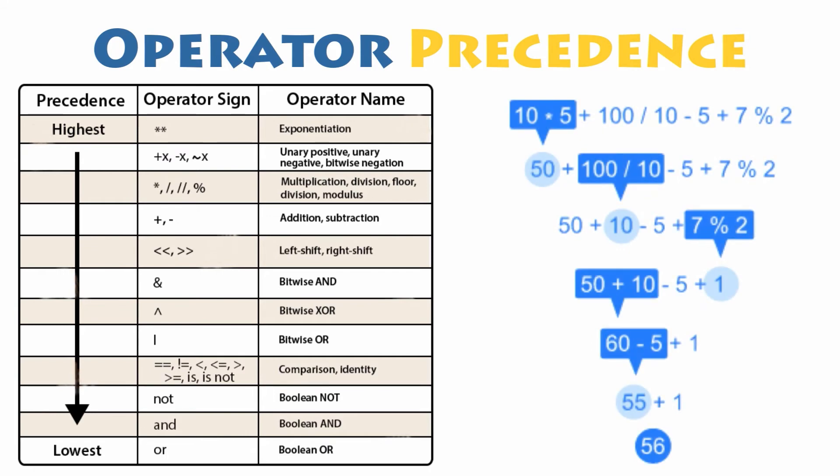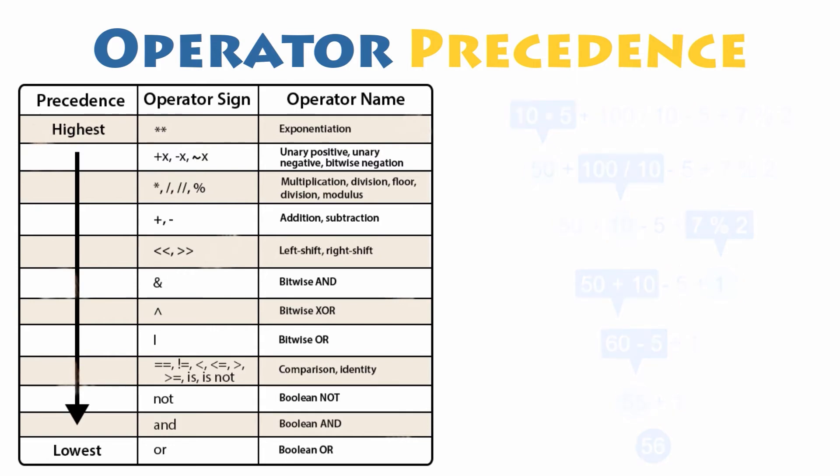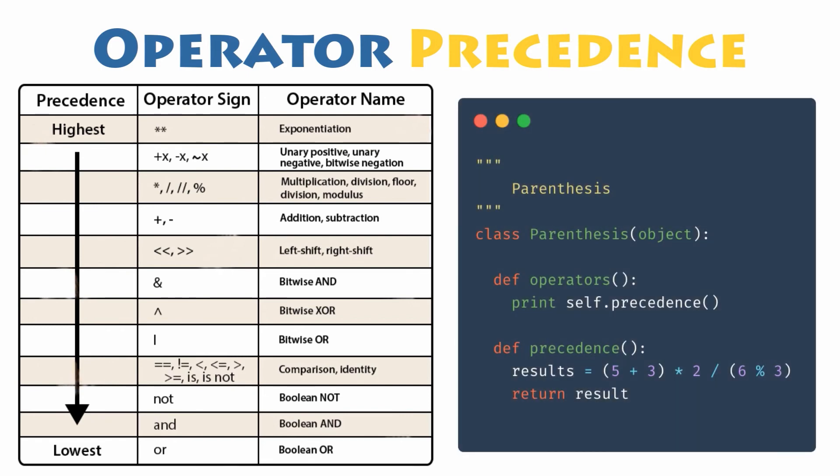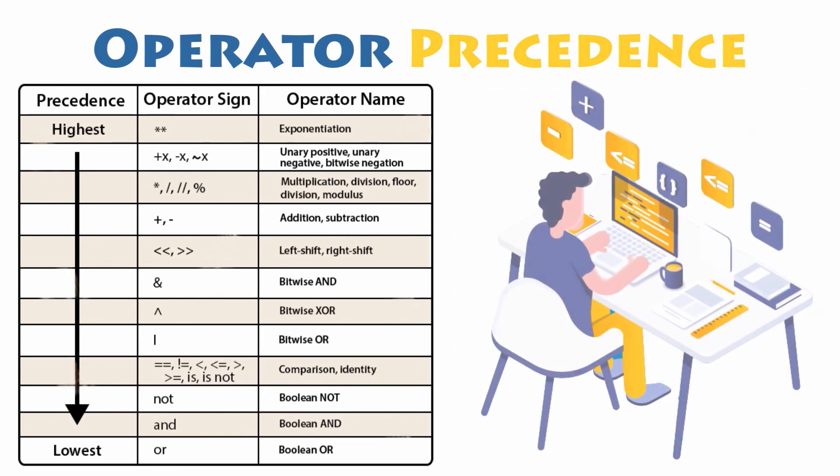There is nothing wrong with making liberal use of parentheses, even when they are not necessary to change the order of evaluation. In fact, it is considered good practice because it can make the code clearer.